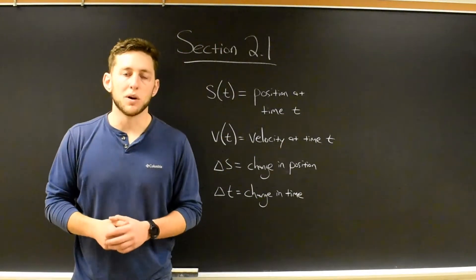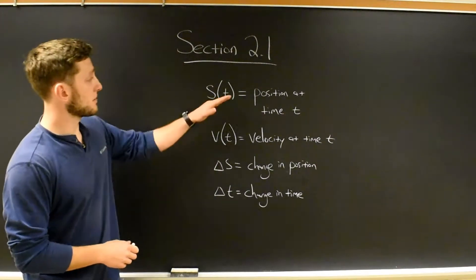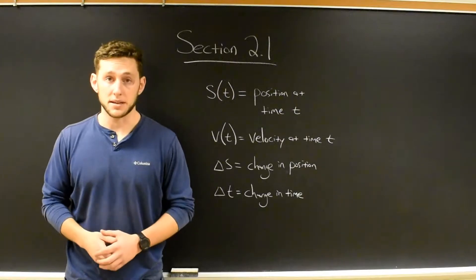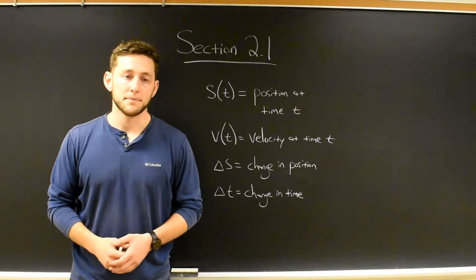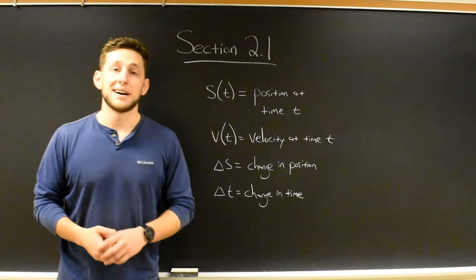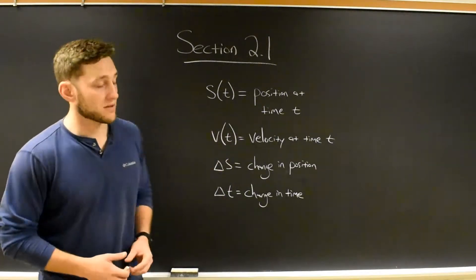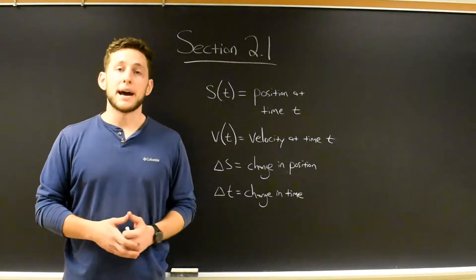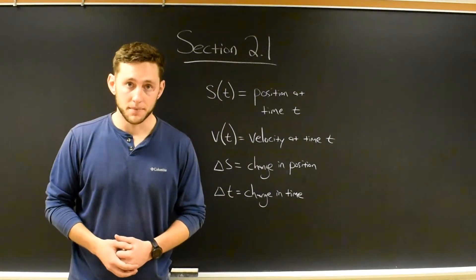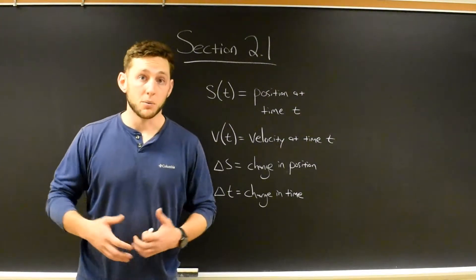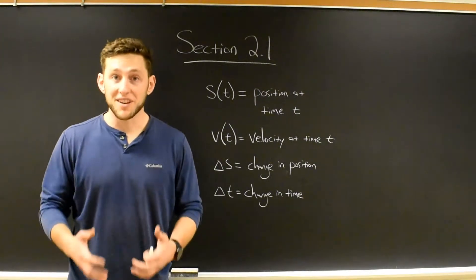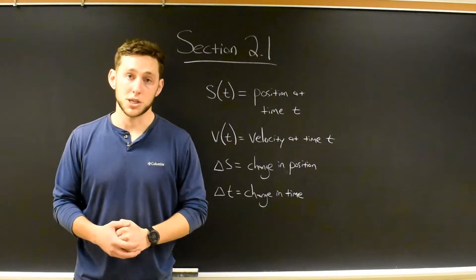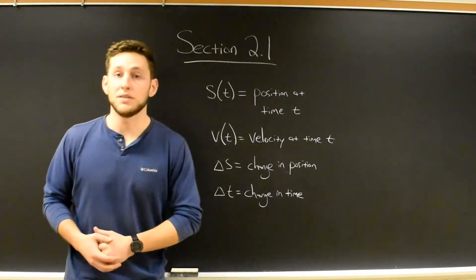The very first thing they're going to want you to know in section 2.1 are these two functions. S of t classically stands for position at time t — you plug in a time, it gives you where you're at. V of t stands for your velocity at time t. These two functions are going to be intimately related. Calculus in large part was developed to help prove physics, which is why we're interested in both position and velocity. Later, we'll be interested in acceleration, which is related to all three of these.